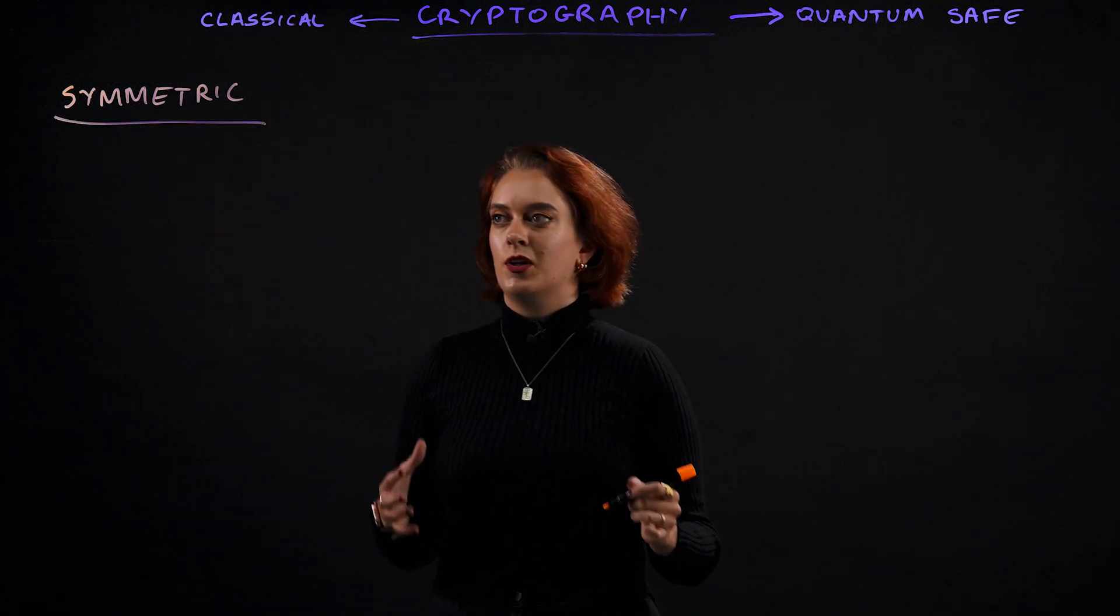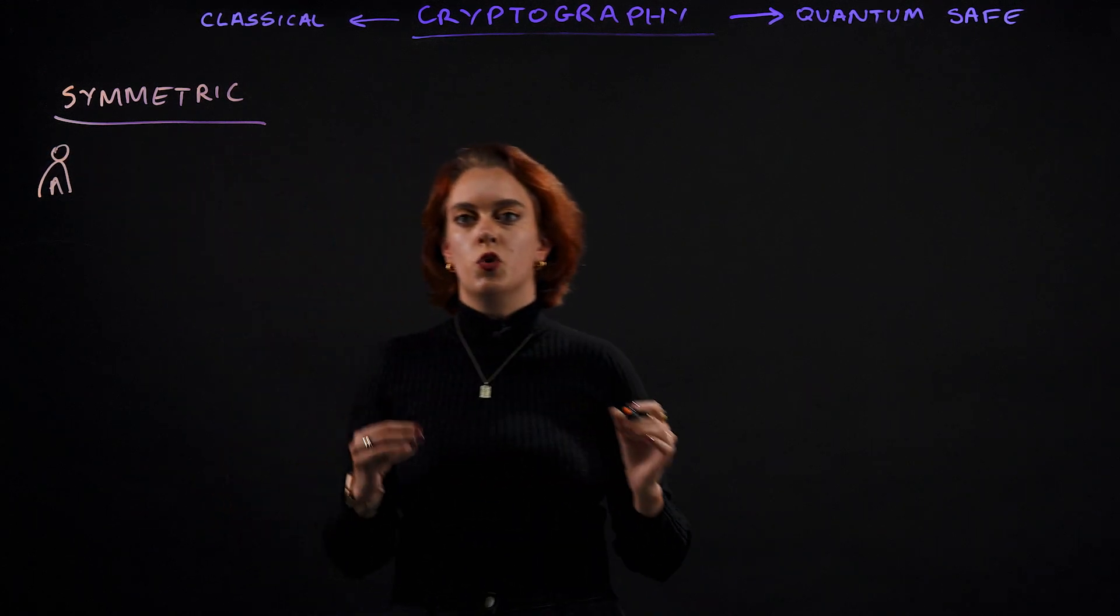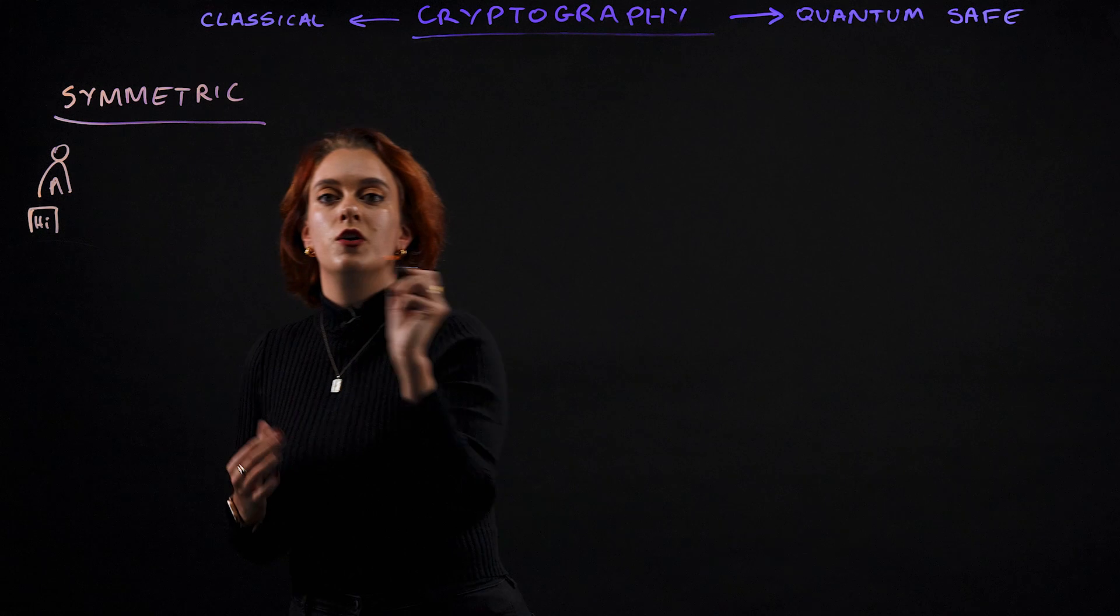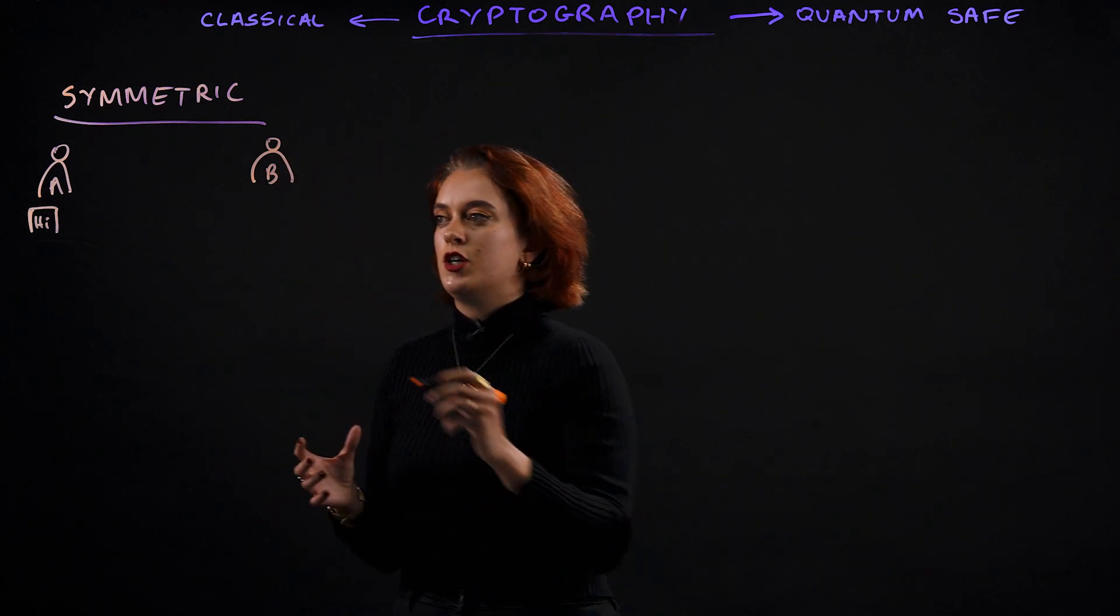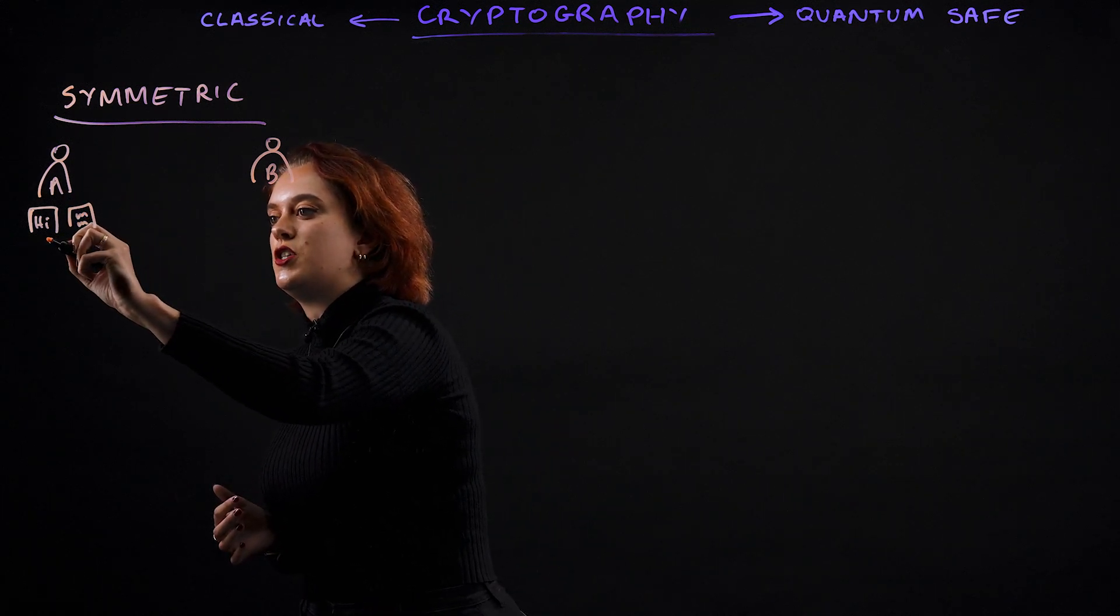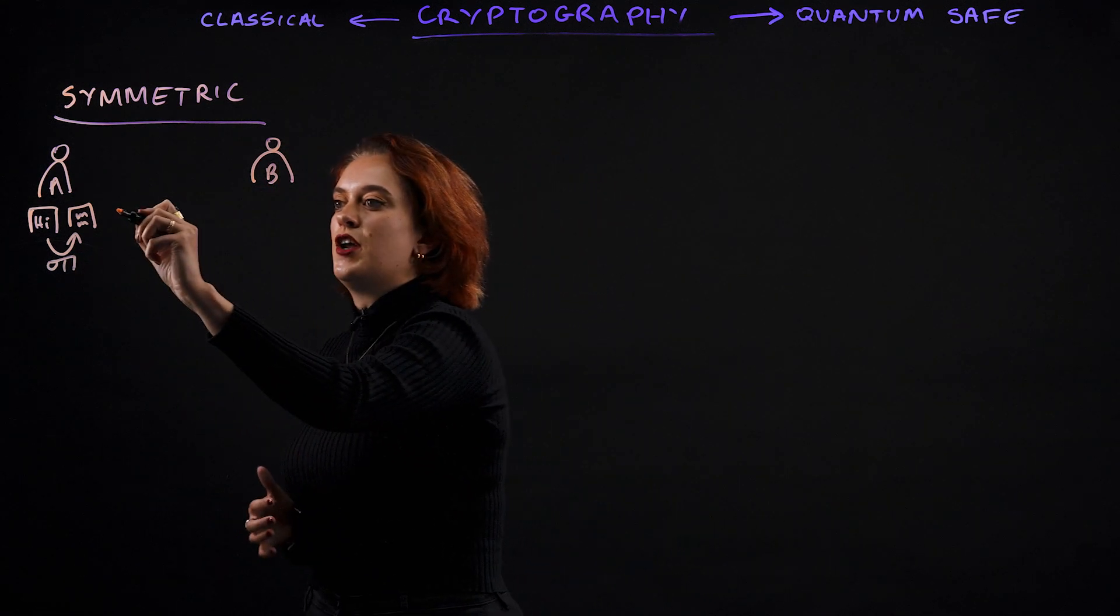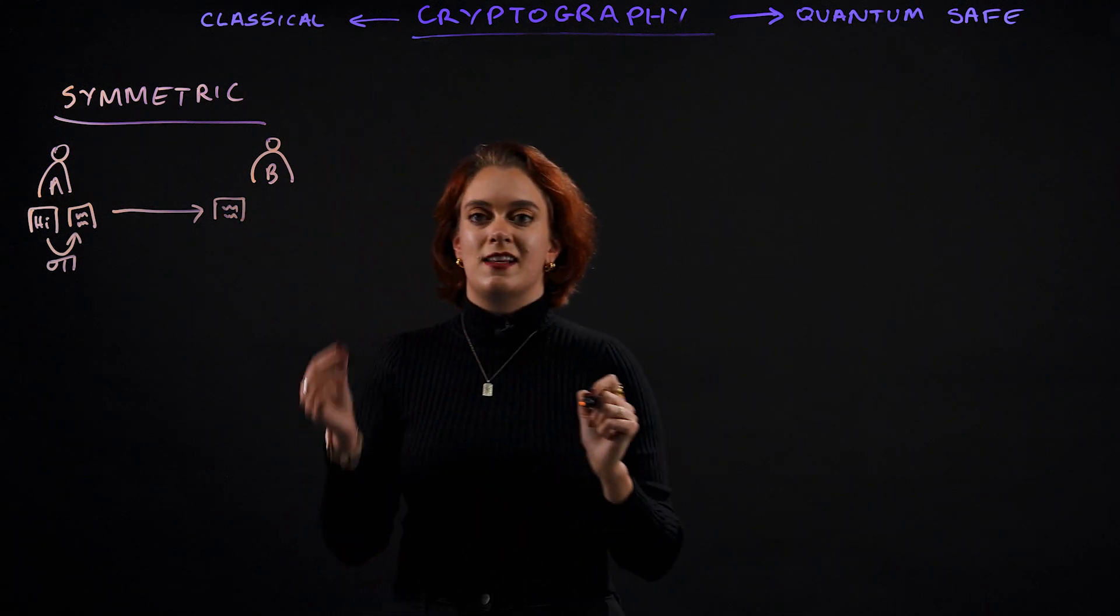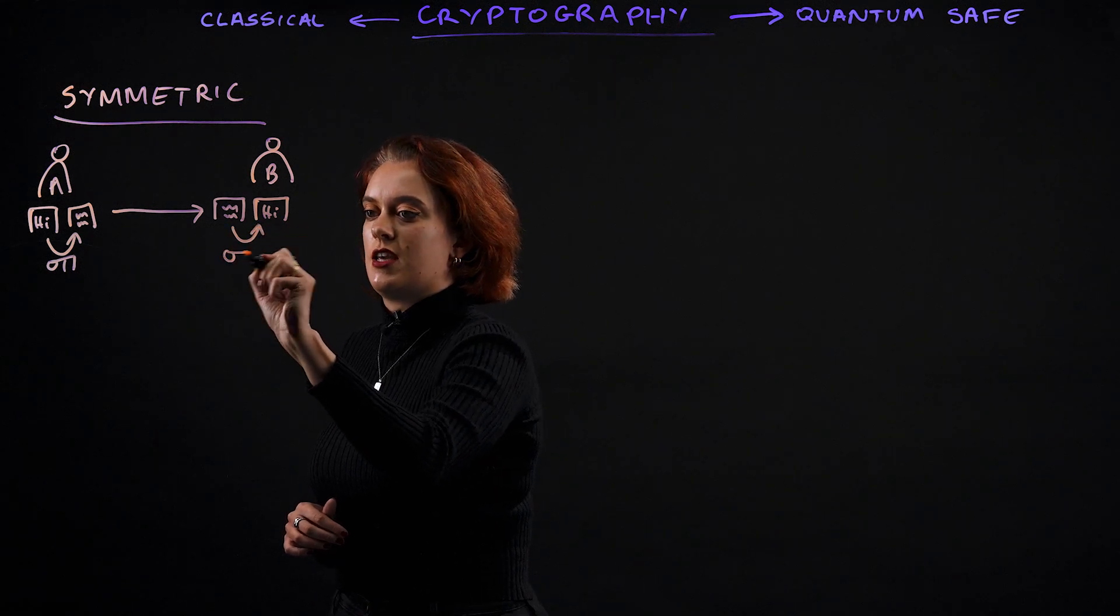We're going to use a classic example of Alice who wants to send a secure message to her friend Bob. In order to do this, she first needs to encrypt her message, which she can do using a secret key. She can then securely send her message to Bob, who can then decrypt that message using the same secret key.